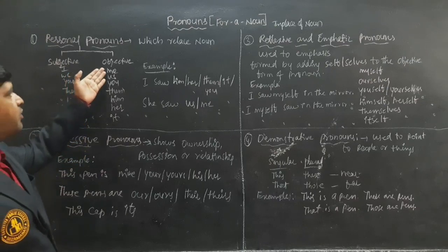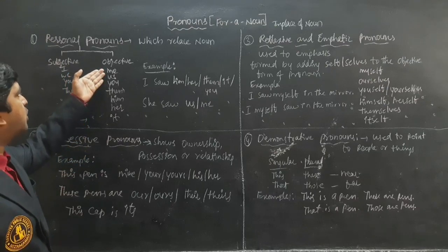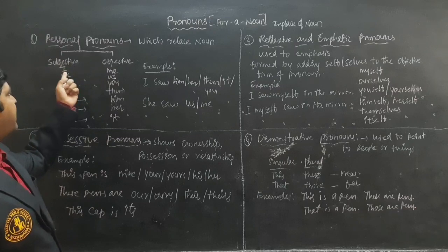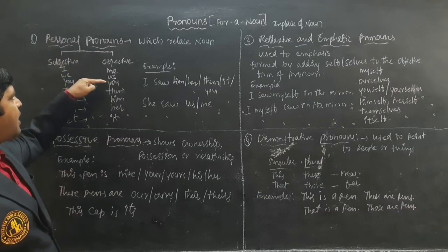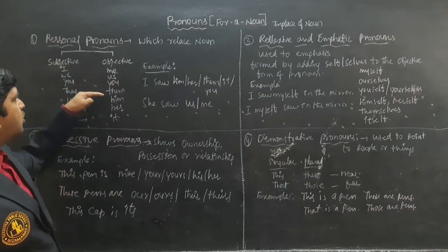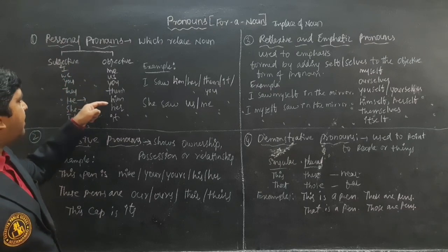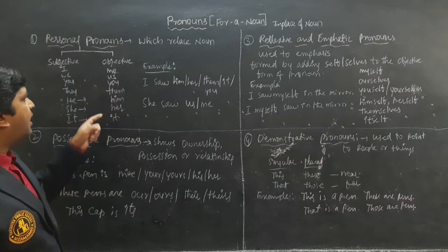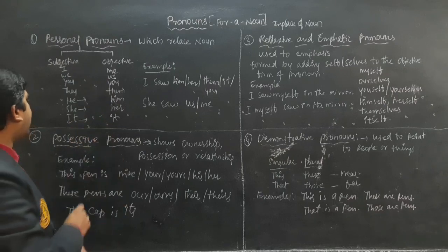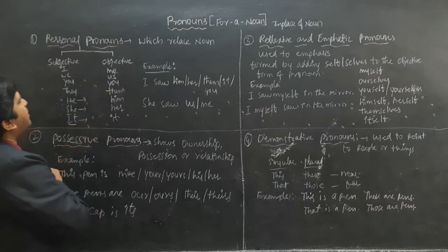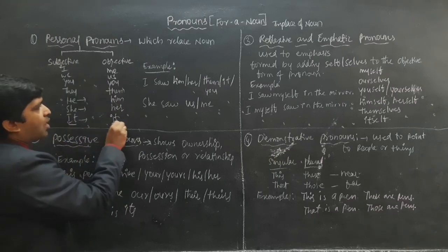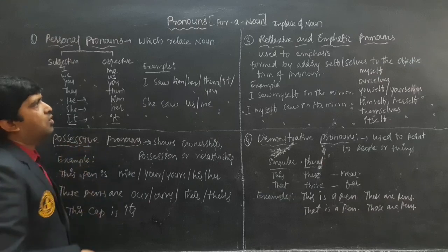In the objective case we use: me, us, you, them, him, her, it. Note that 'it' is the same in both the subjective and objective case.